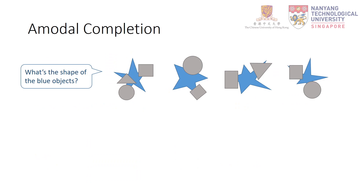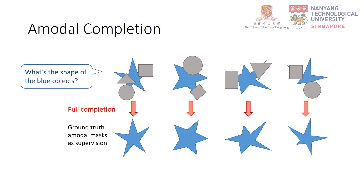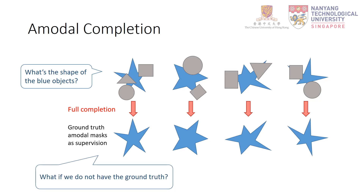To quickly understand the basic idea, let's start from amodal completion. Amodal completion aims at predicting the intact mask of an object given its occluders. Looking at the blue objects and their grey occluders, humans can readily tell the original shape. For a machine, given ground truth amodal masks as supervision, we can train a network to perform full completion of objects — completing the object mask at once. However, what if we don't have the ground truth?